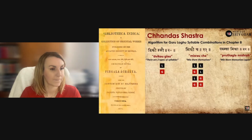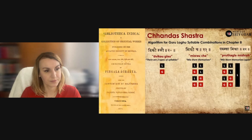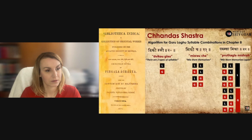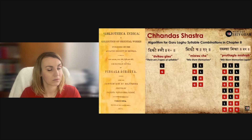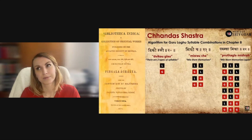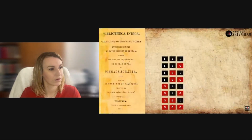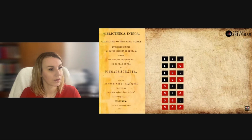Step three, 'prudagla misraha': repeat the same process. Take all four two-letter combinations and mix each once with laghu and once with guru — then you have exhaustively all possible combinations for a three-lettered word. For a four-lettered word, repeat the process again. For a five-, six-, seven-, or n-lettered word, repeat this process n times, and you have all possible syllable combinations to fulfill your word construct.